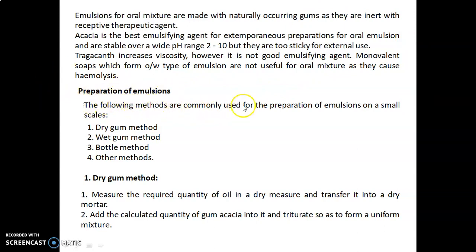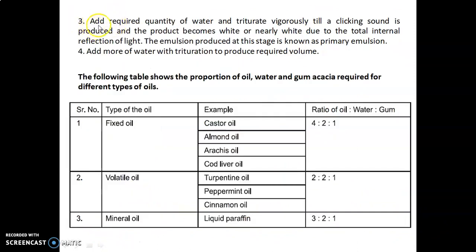Preparation of emulsions: the following methods are commonly used on a small scale — dry gum method, wet gum method, bottle method, and other methods. In the dry gum method, first measure the required quantity of oil and transfer into a dry mortar, then add the calculated quantity of gum acacia and triturate to form a uniform mixture. Add the required quantity of water and triturate vigorously until a clicking sound is produced and the product becomes white or nearly white due to total internal reflection of light. The emulsion produced at this stage is known as the primary emulsion. Then add more water with trituration to produce the required volume.